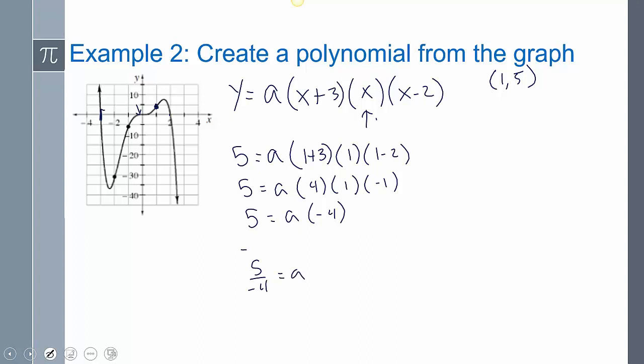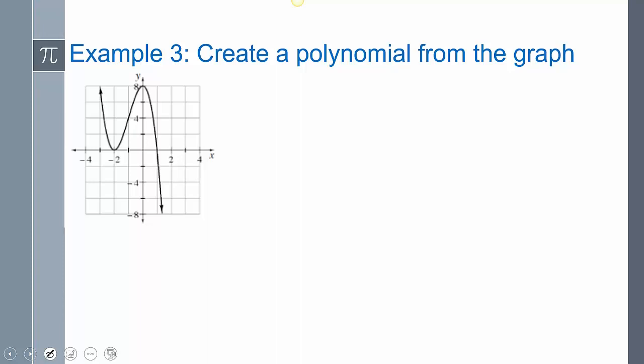So I get five over negative four equals A. So now plugging that back into my polynomial, I get Y equals negative five over four X. I'll put this one first. And then X plus three, and then X minus two. And you don't have to put that first. It is nicer, it looks better. You could also say that this is F of X. But I construct a polynomial, you plug in a point that it gives you, and then you find what that A is.